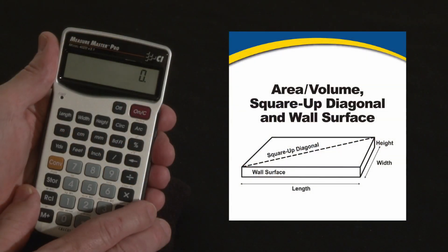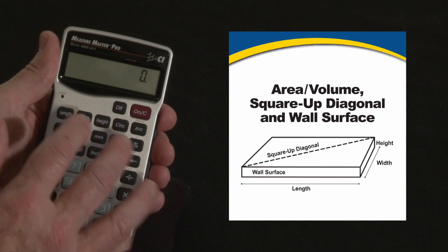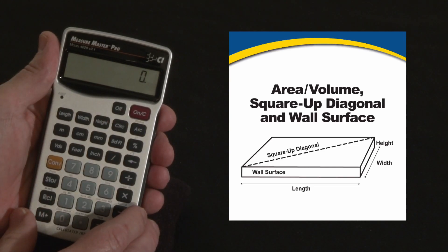Now let me show you how to use your MeasureMaster Pro's Length, Width, and Height keys to get areas, volumes, square up diagonals, wall surface areas, and more.